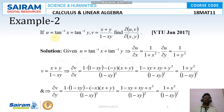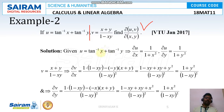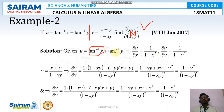Next problem: if u = arctan(x) + arctan(y) and v = (x + y)/(1 − xy), find ∂(u,v)/∂(x,y). We need ∂u/∂x, ∂u/∂y, ∂v/∂x, and ∂v/∂y. The derivative of arctan(x) gives ∂u/∂x = 1/(1 + x²), and the arctan(y) term gives zero here. Similarly ∂u/∂y = 1/(1 + y²).